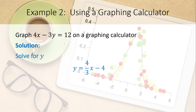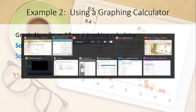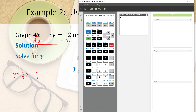Starting with 4x minus 3y equals 12, subtract 4x from both sides to get negative 3y equals negative 4x plus 12. Divide both sides by negative 3 to get y equals four-thirds x minus 4.